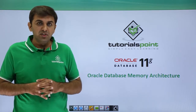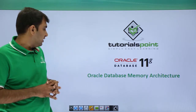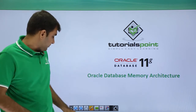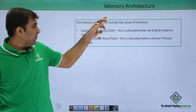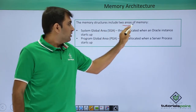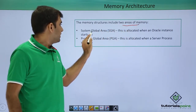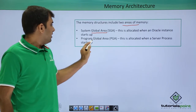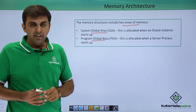Hello friends, in this session we are going to see Oracle Database Memory Architecture. Memory architecture includes two areas of memory: one is the SGA, that is called the System Global Area, and the next one is the PGA, that is called the Program Global Area.